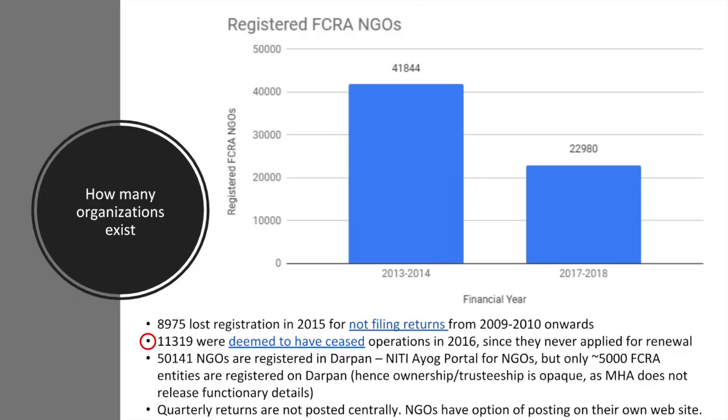Another 11,000 were deemed to have ceased operations because they were supposed to have applied for renewal in 2015, did not apply, were given one more year, and still did not apply. The government assumed they did not need the money and cancelled their registration. The vast majority of entities whose registrations were cancelled were probably not active at all. The regulation has therefore not significantly impacted those who were really active all along — roughly 20,000 odd organizations which are actually active are the ones who have been and will continue to receive funds.